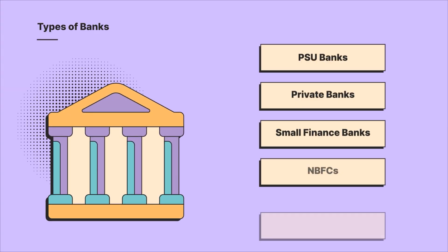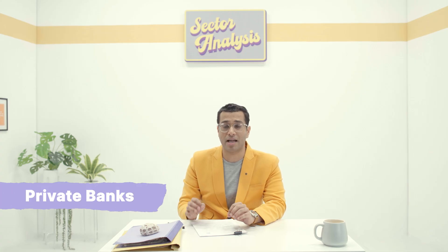Let us understand the industry landscape of the banking sector in India. There are five different types of banks. First and foremost, we have PSU banks — prominent examples include Punjab National Bank, Canara Bank, and SBI. These are typically considered to be trading stocks. The second category is private banks, where a large chunk of value in banking has flowed over the last two decades. Classic examples are HDFC Bank and ICICI Bank, which have grown at an exponential pace.